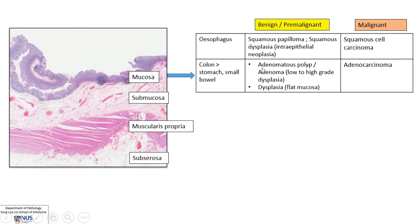Going down more distally, benign neoplasms or polyps are seen most commonly in the colon, called adenomatous polyps. Some polyps are hyperplastic or inflammatory, but an adenomatous polyp is actually neoplastic. It can be called a tubular adenoma or a villous adenoma depending on the architecture under the microscope, or sometimes a mixed pattern — tubulo-villous adenoma. Adenomas can have low- or high-grade dysplasia. You can also have dysplasia in flat mucosa without a polyp. High-grade dysplasia is worrying for progression to an invasive glandular tumor called adenocarcinoma.